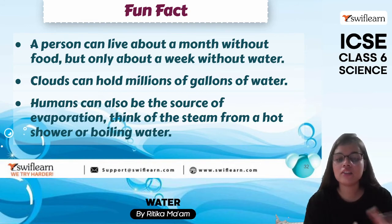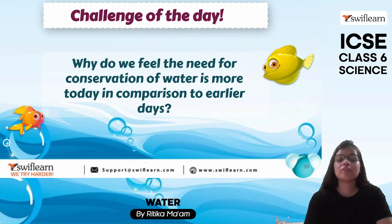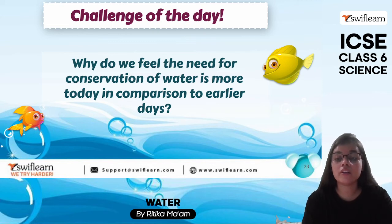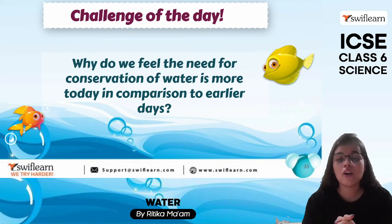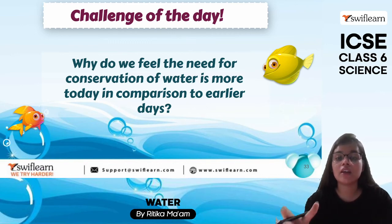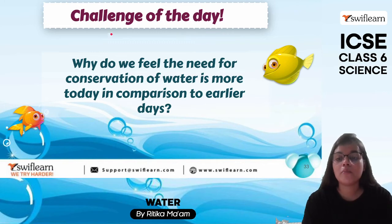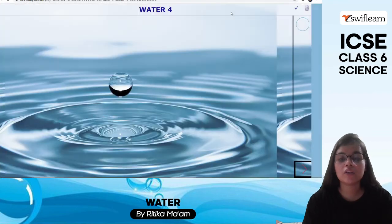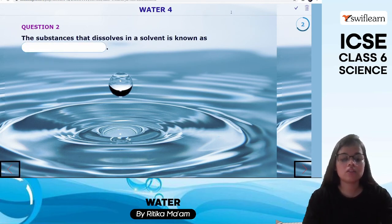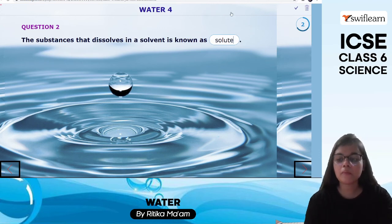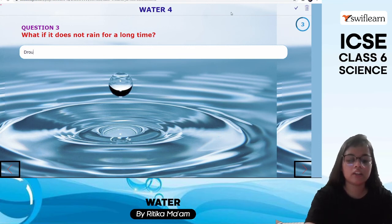Challenge of the day: why do we feel the need to conserve water more today compared to earlier? In earlier times, population was limited and water was used for limited purposes. Nowadays population is very high and we need water for many more things, so while the water level remains the same, the population keeps increasing. That's why conservation is more critical today. Activity: diarrhea is caused by infection in the intestine; the substance that dissolves in a solvent is solute; and if it doesn't rain for a long time, it leads to drought.